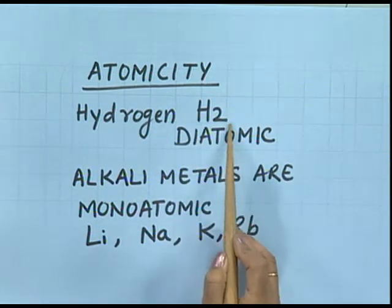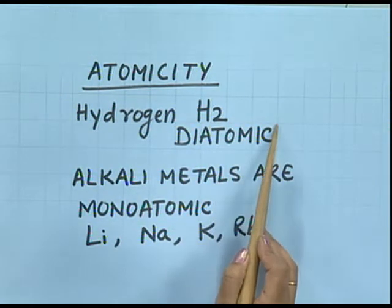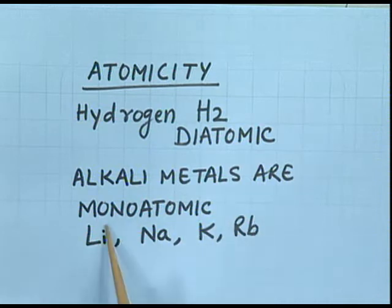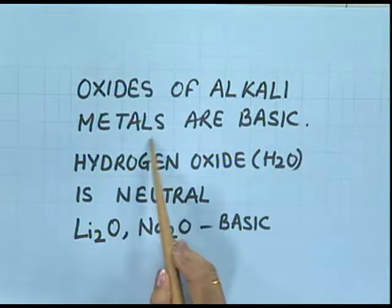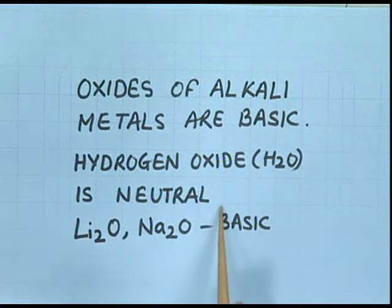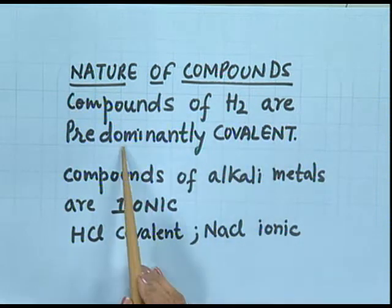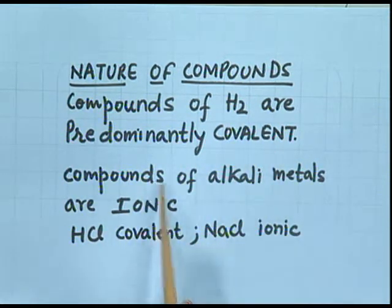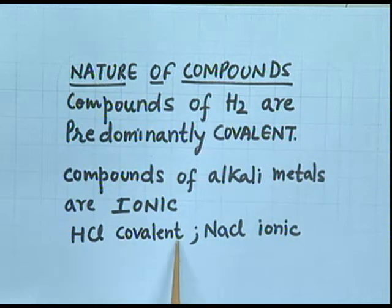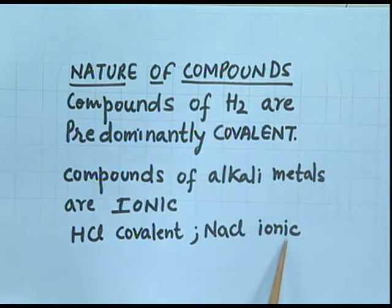Alkali metals also differ from hydrogen in their oxides: oxides of alkali metals are basic, whereas hydrogen oxide (water) is neutral. Regarding the nature of compounds: compounds of hydrogen are predominantly covalent, while compounds of alkali metals are ionic. For example, hydrogen chloride is covalent, formed by the sharing of electrons, but NaCl is ionic, formed by the transfer of an electron — sodium loses one electron and chlorine gains one electron.